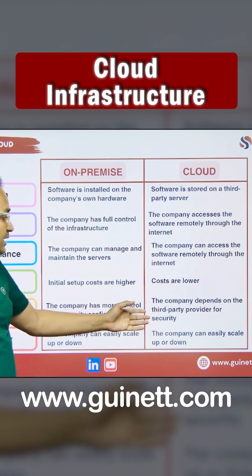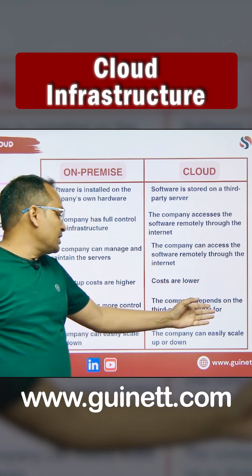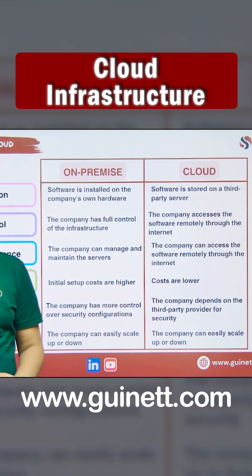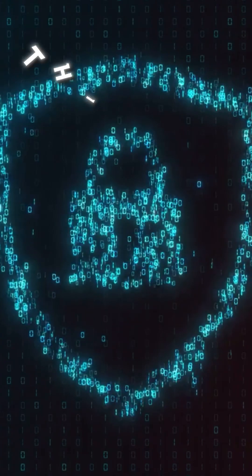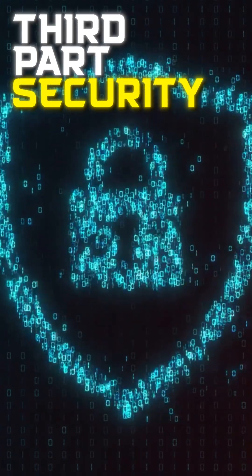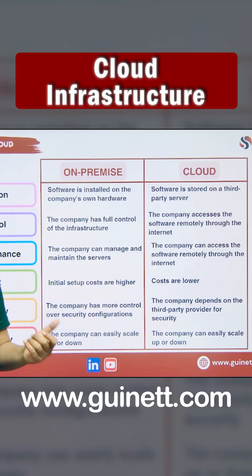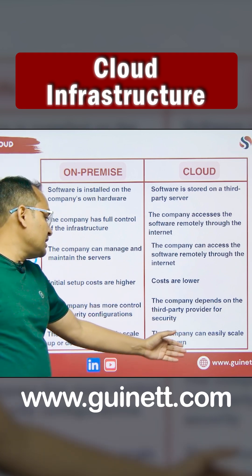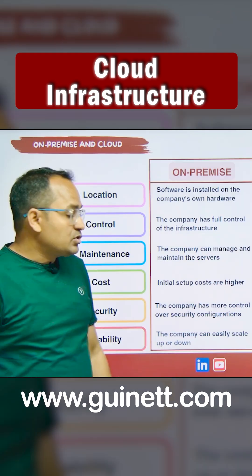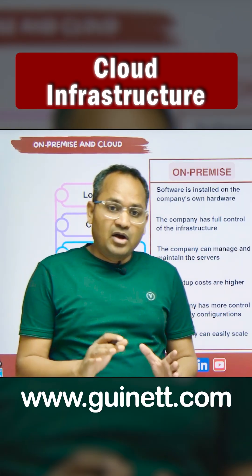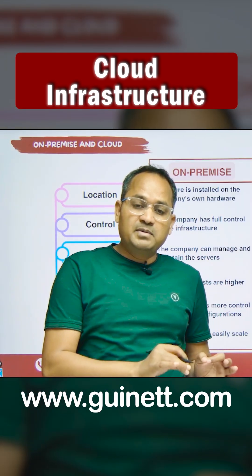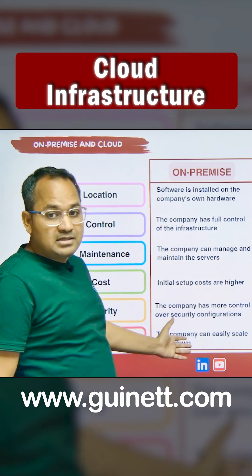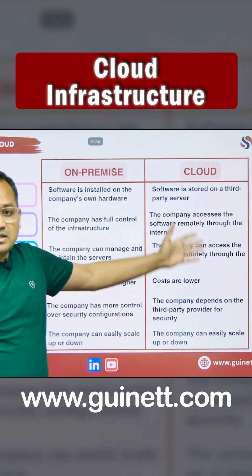The company depends on the third-party provider for security — security is not in your control, it's the third party's responsibility. The company can easily scale up and down. In short, cloud and on-premises are two types of data centers: one is a small data center and one is a big data center.